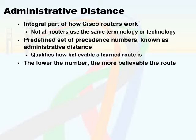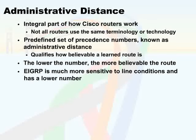A good example of that is the difference between the accuracy of the EIGRP metric versus the RIP metric. Because these two protocols actually calculate the routing information differently in determining the cost and distance of the route. EIGRP is actually much more sensitive to line conditions, and therefore it's given a lower administrative distance number because of its greater believability.